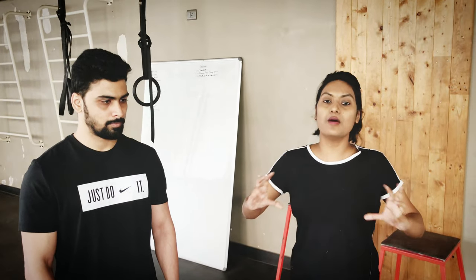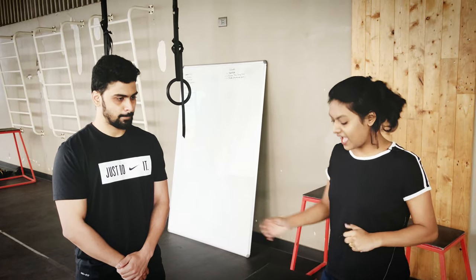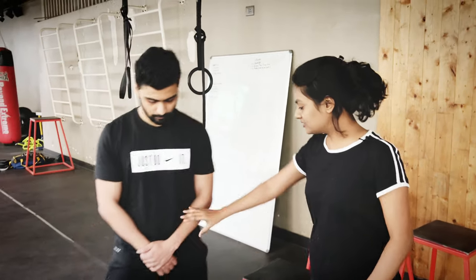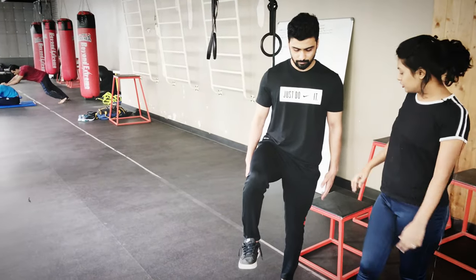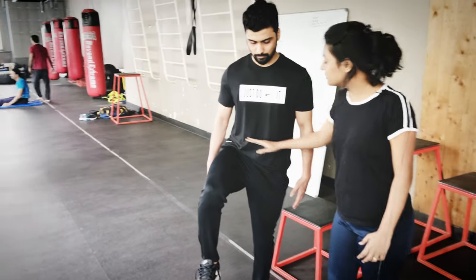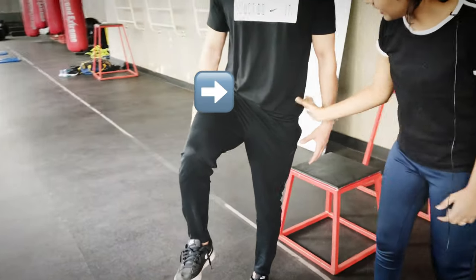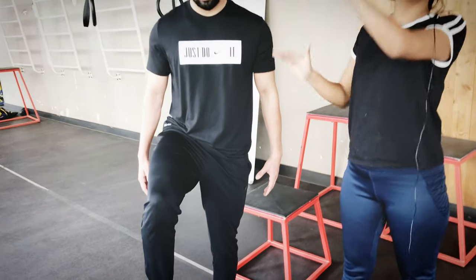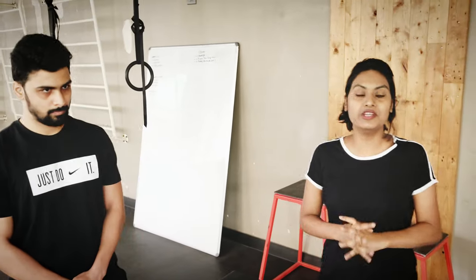Another assessment to do: most fast bowlers will have some hip stability problem. One cause is the degenerative process, and the second is stability. For the stability assessment, ask your fast bowler to stand in a single leg stance position with arms down. Your eye should check whether both the ASISs are in a straight line. With hip stability issues, one ASIS will be down and the other up — that is the most common problem, suggesting the hip stability component is also affected.